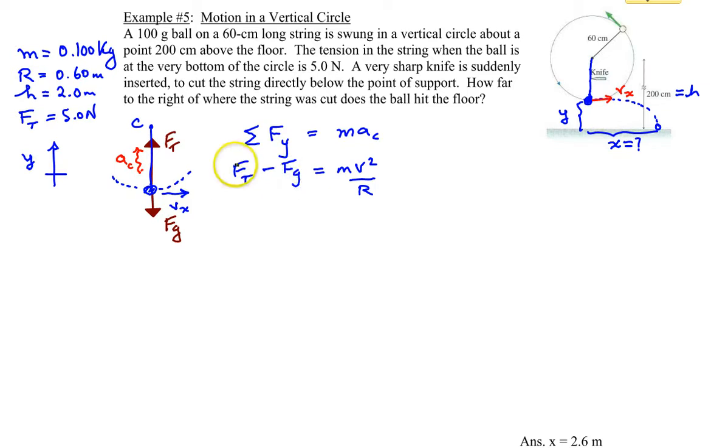Now we're given the tension of five newtons, we're given the mass of the ball. We also know that Fg is really mg. And we're looking for the velocity of the ball. So we're looking for v at that particular point, vx, technically.